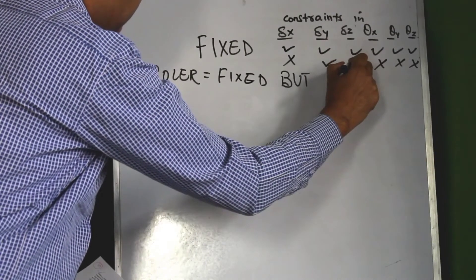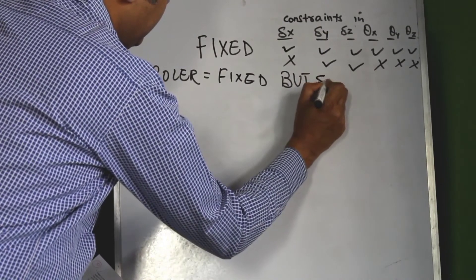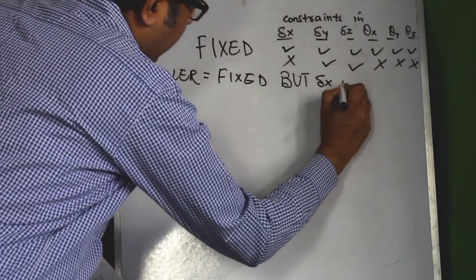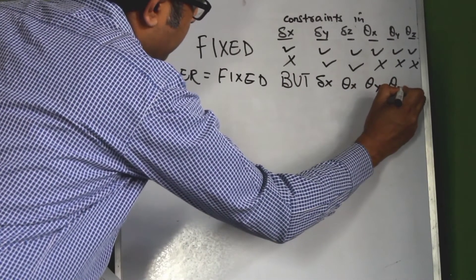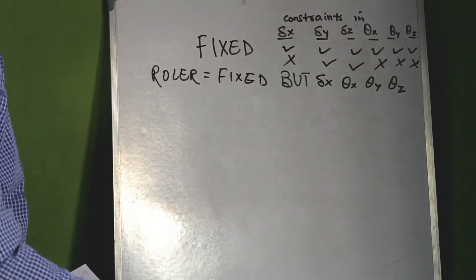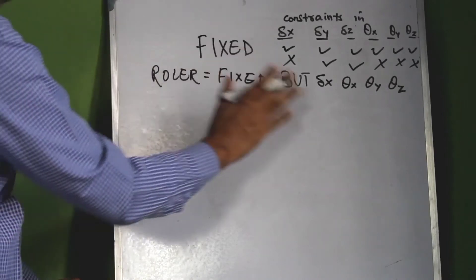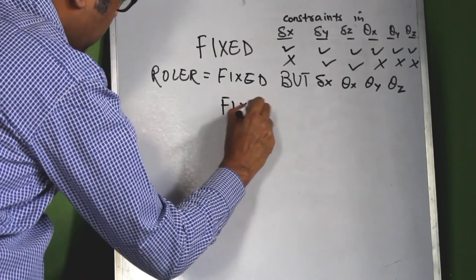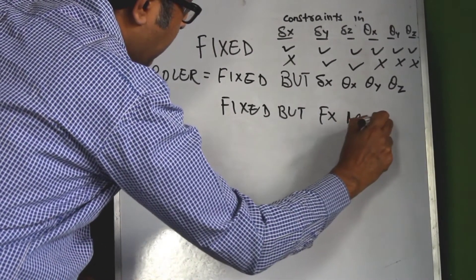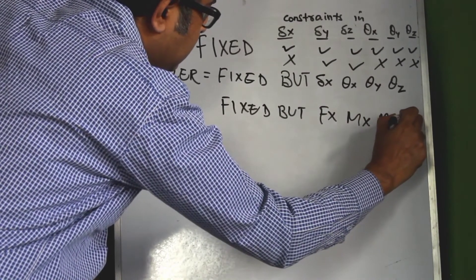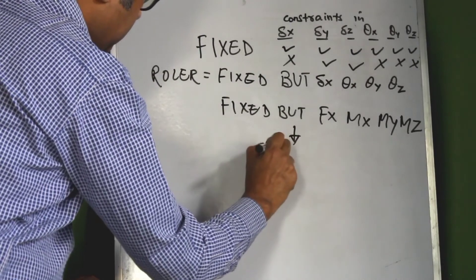The constraints would remain in delta y and delta z. In STAAD.Pro syntax, delta x is represented as FX, theta x as MX, theta y as MY, and theta z as MZ. So the command 'FIXED BUT FX MX MY MZ' represents a roller support in STAAD.Pro, meaning the support is fixed except that it is free in those specified directions.